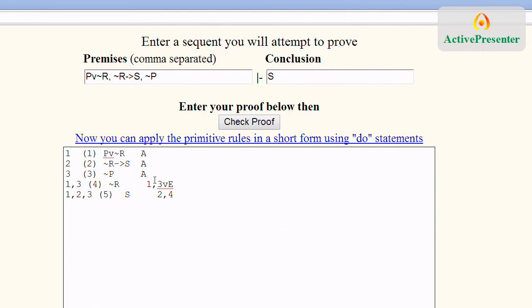And then you have to cite the lines using, for the premises, use A for assumption. And then for other lines, the line numbers and the rule that you've used to manipulate.